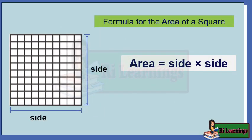The formula for calculating the area of a square is: area equals side times side. Side represents the length of one side of the square. This formula holds true for squares of any size, whether they are small or large.